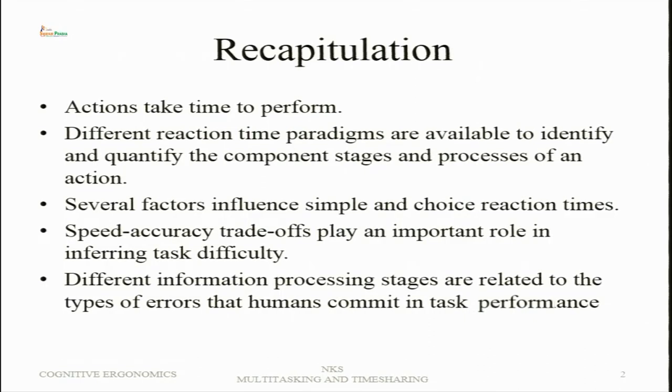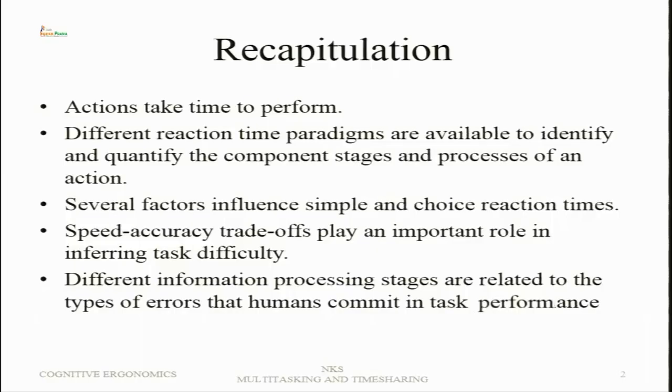What we have already done is that actions take time to perform, which can be measured in the form of reaction time — either a simple reaction time or a choice reaction time depending upon how many alternatives are available for action. Several factors influence simple and choice reaction times. Speed-accuracy trade-off can be understood in terms of how one affects the other. If we try to enhance the speed, then more errors may be committed. Therefore, a balance has to be decided in any particular task. In most situations, managers may decide that a certain level of errors may be allowed so that the task can be finished with a certain speed, but those errors are within acceptable limits.